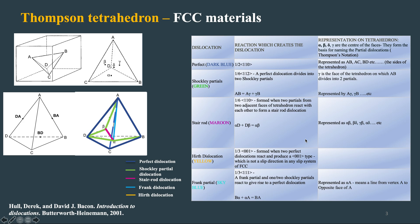So if you see in FCC materials to understand dislocations, you should understand Thomson tetrahedron. So this Thomson tetrahedron is nothing but a close-packed tetrahedron which are formed by joining the face centers of the FCC cube.